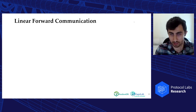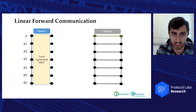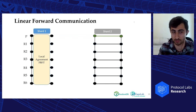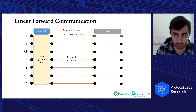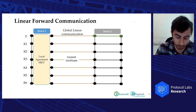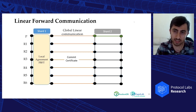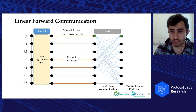For inter-cluster communication, we use minimal global linear communication between shards. For example, if we want to send the result of local PBFT agreement in the previous shard to the next shard, we use a linear one-to-one communication pattern, sending the commit certificate of the consensus instance. After this global linear communication phase, to ensure that everybody in the second shard has received the results of the previous shard, we do another local cheap round of communication. This local round is inexpensive compared to global communication, and after that, nodes wait for a commit certificate.